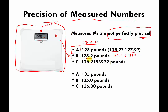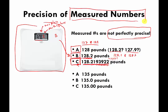Scale B knows down to the tenths place. Then there's a much more precise Scale C, which knows my weight down to many digits past the decimal point — but even this scale isn't perfectly precise. It might know seven digits past the decimal, but there could be other digits after that. Whenever you make a measurement, almost all of the time it is not perfectly precise.